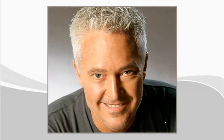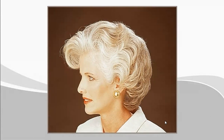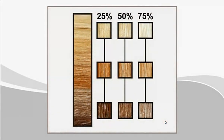Different patterns of gray can occur with each individual. Generally, most people begin to gray around the front hairline first and the nape area last. Gray hair is found in every field of hair color, from dark to medium to light, and is generally classified as 25%, 50%, or 75% gray.